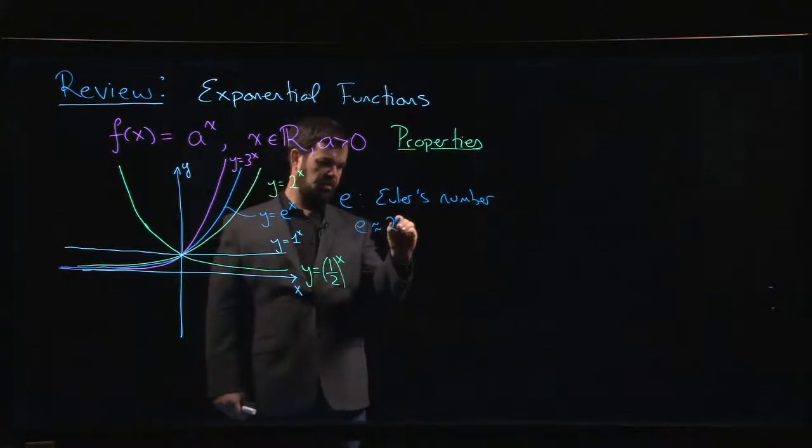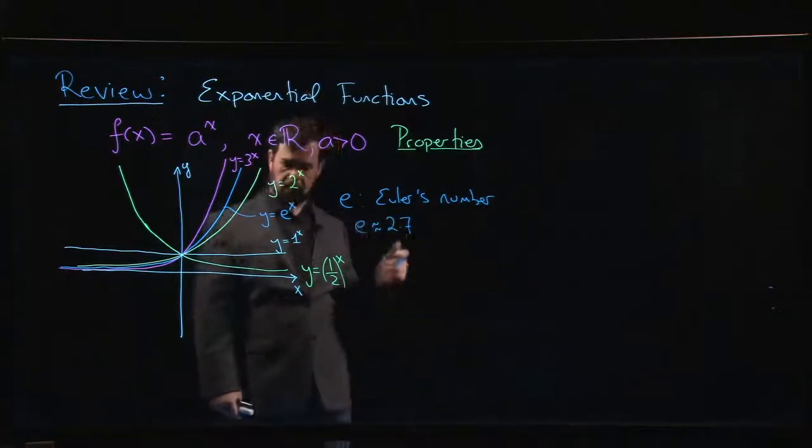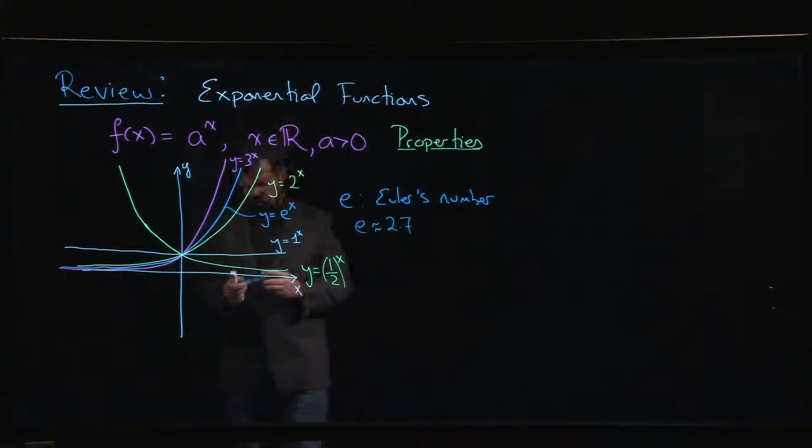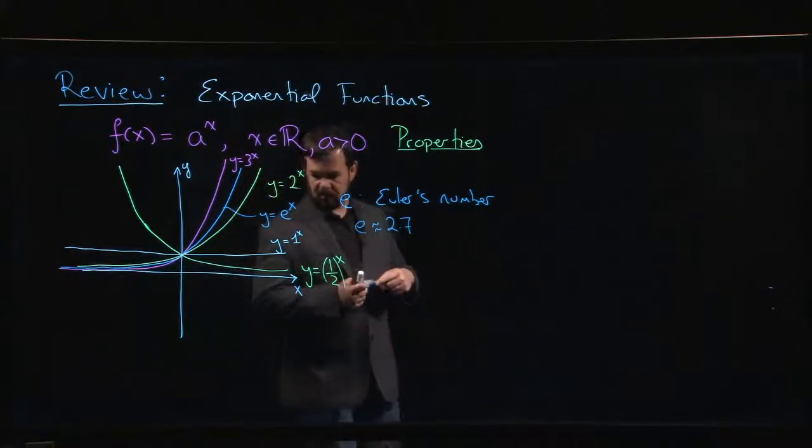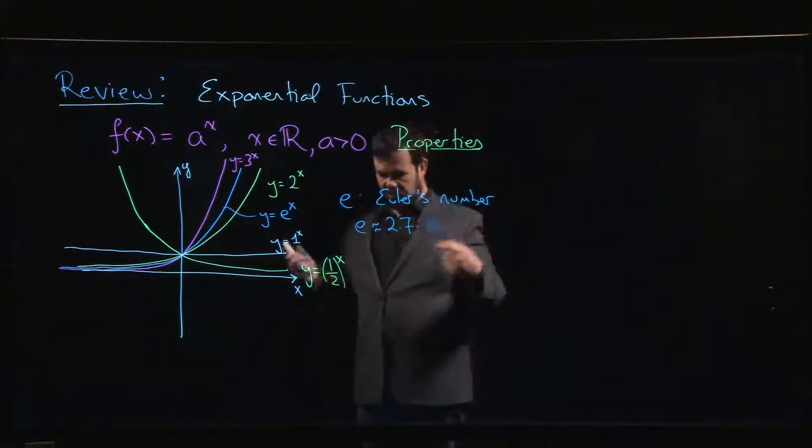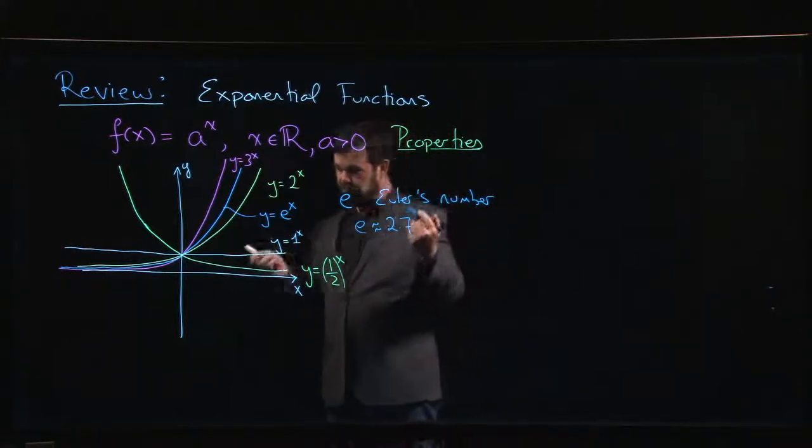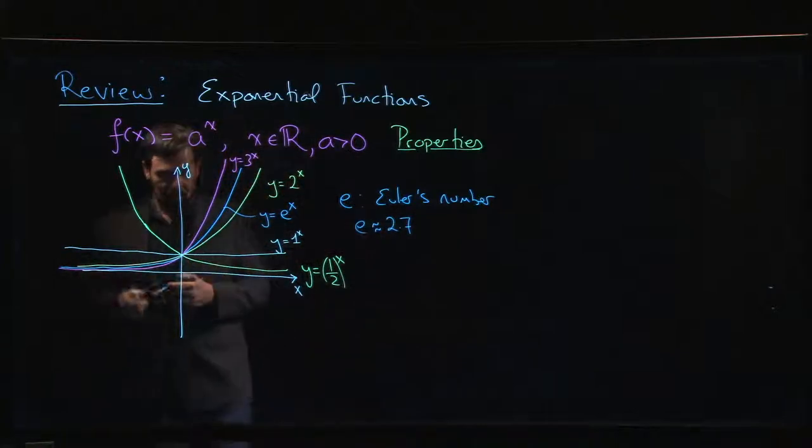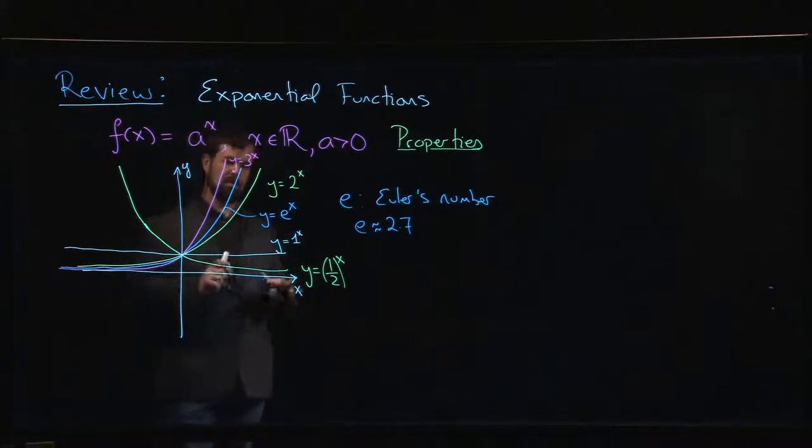It's around 2.7. It's an irrational number - in fact it's what's called a transcendental number, just like pi. It's in some sense a complicated number, in some sense a simple number.